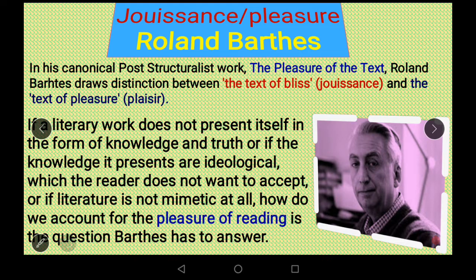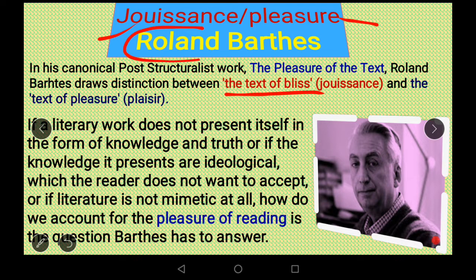We come now to our last concept: jouissance and plaisir — basically in contrast with pleasure. These terms are from Roland Barthes's post-structuralist work 'The Pleasure of the Text.' Barthes draws a distinction between the text of bliss — jouissance, the French term for a kind of bliss — and the text of pleasure, plaisir. What bothered Barthes was: if a literary work does not present itself in the form of knowledge and truth, or if the knowledge it presents is ideological which the reader does not want to accept, and if literature is not mimetic at all, then where does the pleasure of reading come from? This is the question Barthes wants to tackle.